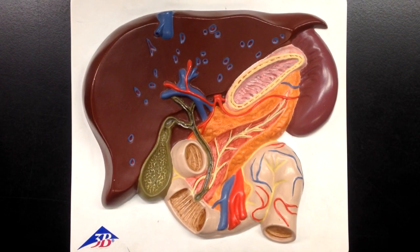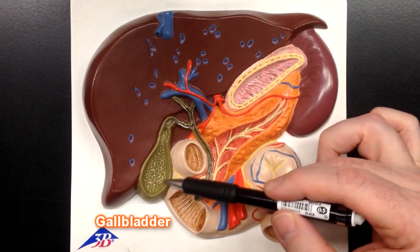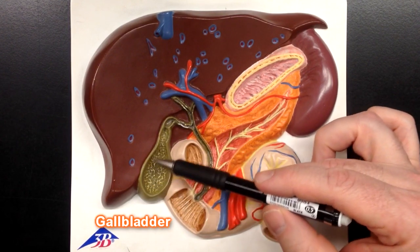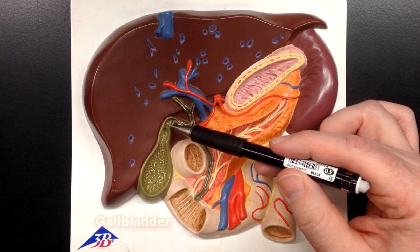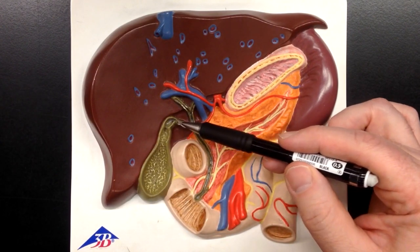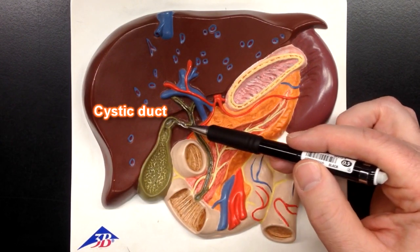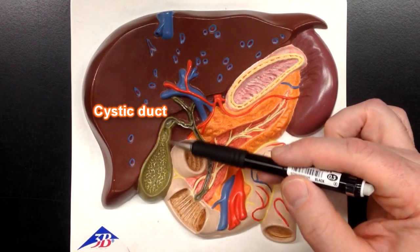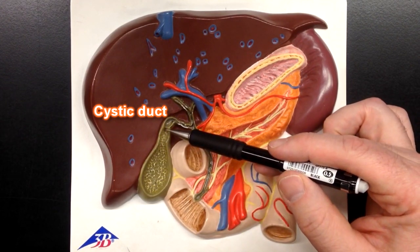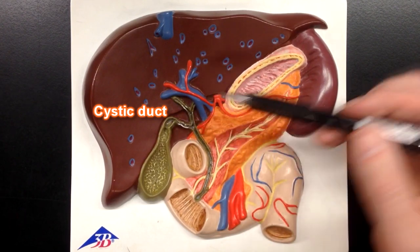This cute little model is designed to show the bile ducts. I'll start with the gallbladder right here. This structure right here is the gallbladder that's going to store bile. This structure right here is going to be the cystic duct, named after this sac — the gallbladder. So this is the cystic duct.